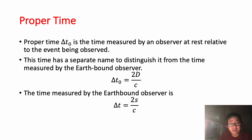In time dilation, we have another term about proper time. Proper time, denoted Δt₀, is the time measured by an observer at rest relative to the event being observed. In the previous example, this is the astronaut who is in the spaceship and sees the light emit up and down. This time has a separate name to distinguish it from the time measured by the Earth-bound observer, another person who sees how the light is moving. In this case, it's longer. About the equation, we have Δt₀ = 2D/c, while the time measured by the Earth-bound observer is Δt = 2S/c.